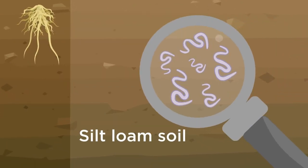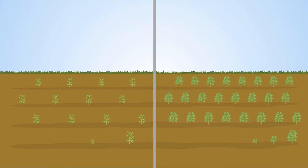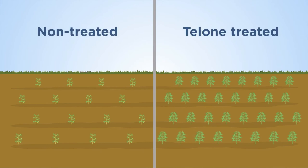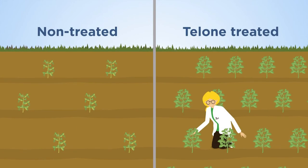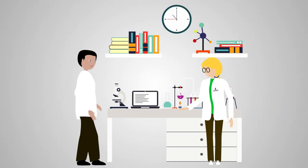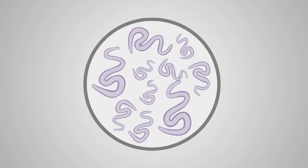A study was conducted in the southern U.S. comparing strips of soybean, either non-treated or telone-treated, with or without a seed-applied nematicide. Using two different nematicides enabled the team to determine their relative effectiveness.